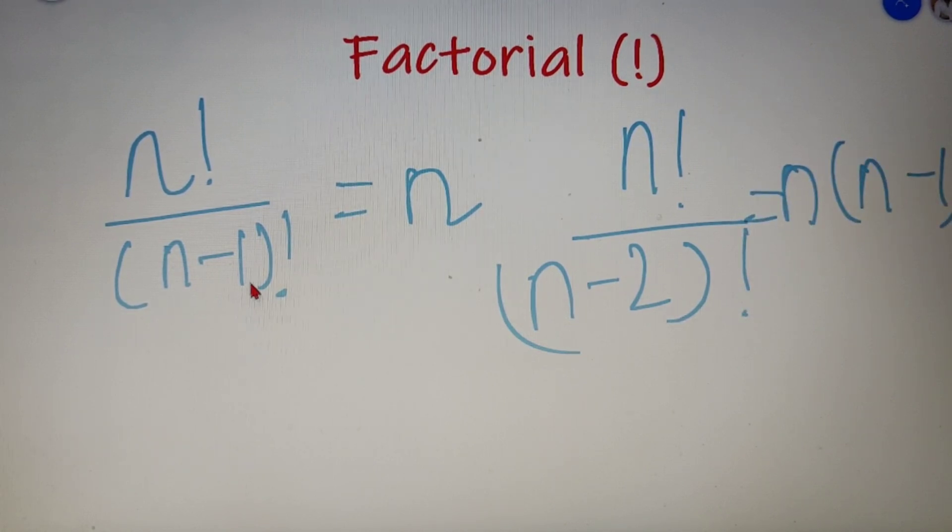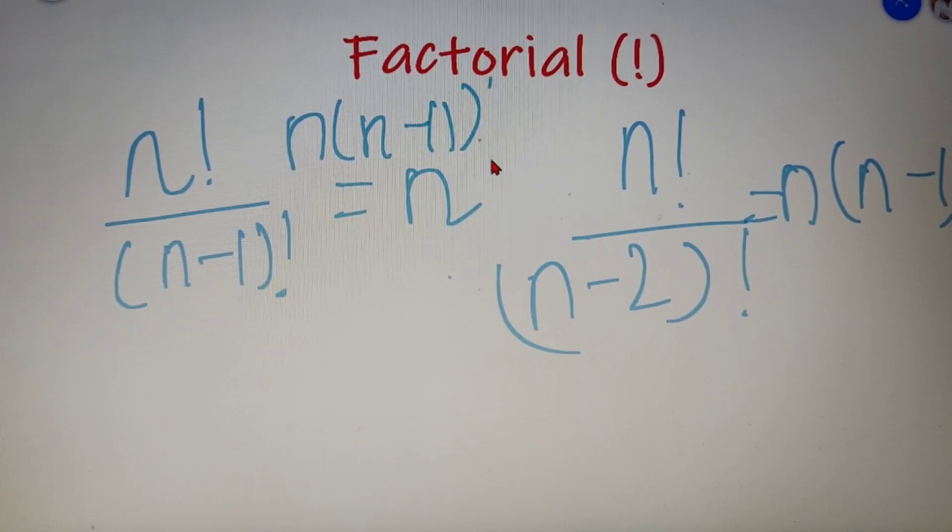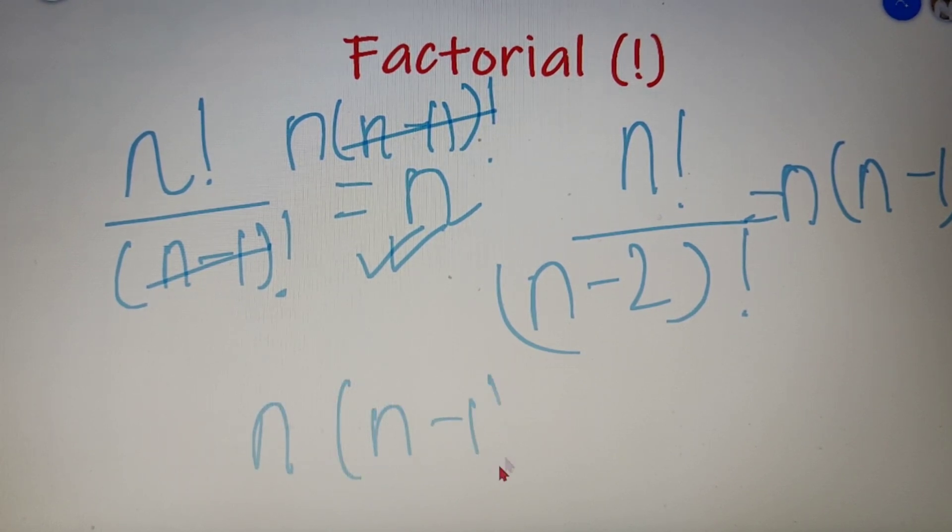Now you can see that n factorial can be represented as n into n minus 1 factorial. So both these n minus 1 factorial will get cancelled and we will get the final answer as n. And same in this case we can represent n factorial as n into n minus 1 into n minus 2 factorial and both the n minus 2 factorial will get cancelled and we will be left out with n into n minus 1.